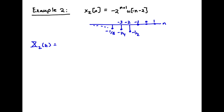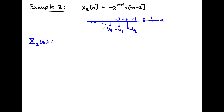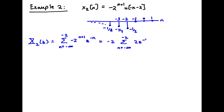Plugging into our formula for the Z-transform, x2(z) is equal to the sum from n equal minus infinity to minus 2 of minus 2^(n+1) times z^(-n). I can pull a minus 2 out front, leaving the sum from n equal minus infinity to minus 2 of (2z^(-1))^n inside.